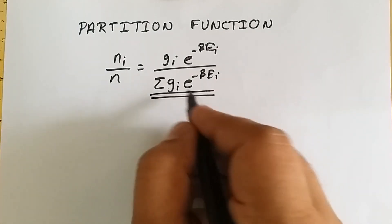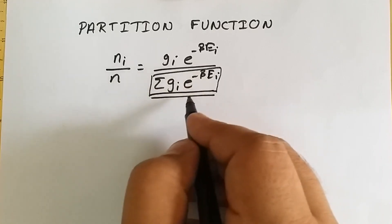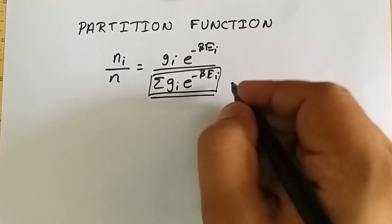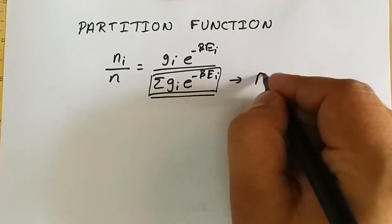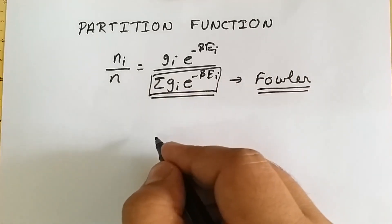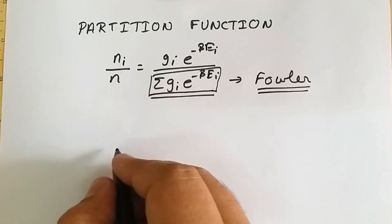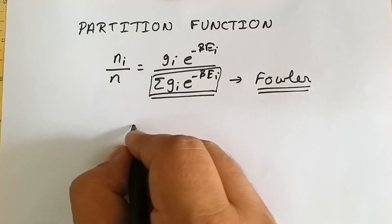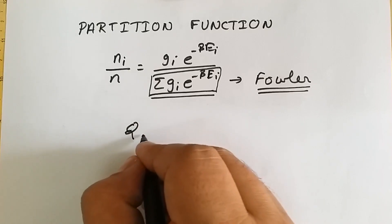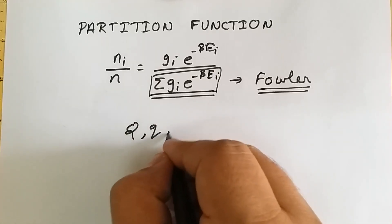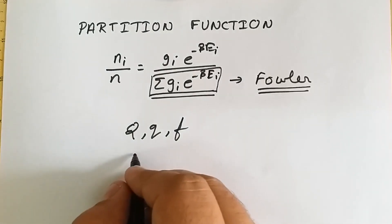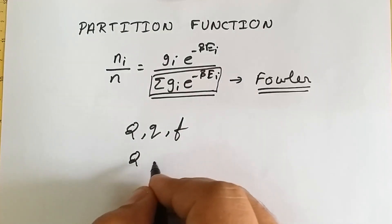The lower term in this equation — the summation term — is known as the partition function. This partition function was given by a scientist called Fowler. The partition function is generally represented by either a capital Q, a small q, or in many books it is represented by f. I will use the term Q.